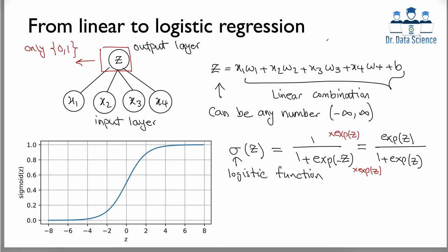The first step is to understand the connection between linear and logistic regression. Let's say we have a problem where we have four input features in our input layer, all connected to our output. In this case, because it's a binary classification problem, the output can only take two different values — we call these zero and one, but they don't have any strict numerical value; they can just be any two different labels.